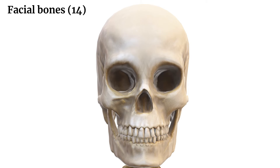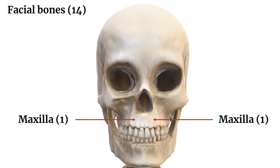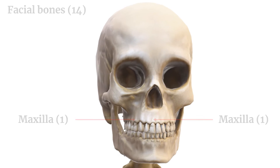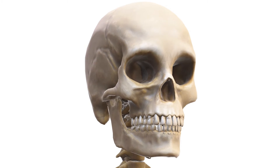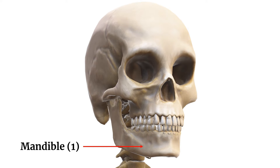Let's start with the facial bones, which shape your face and assist with vital functions like chewing and breathing. Maxilla: these are the upper jaw bones, forming the upper teeth sockets and part of the nose and eye sockets. Mandible: the lower jaw bone, and the only movable bone in the skull, is essential for chewing.